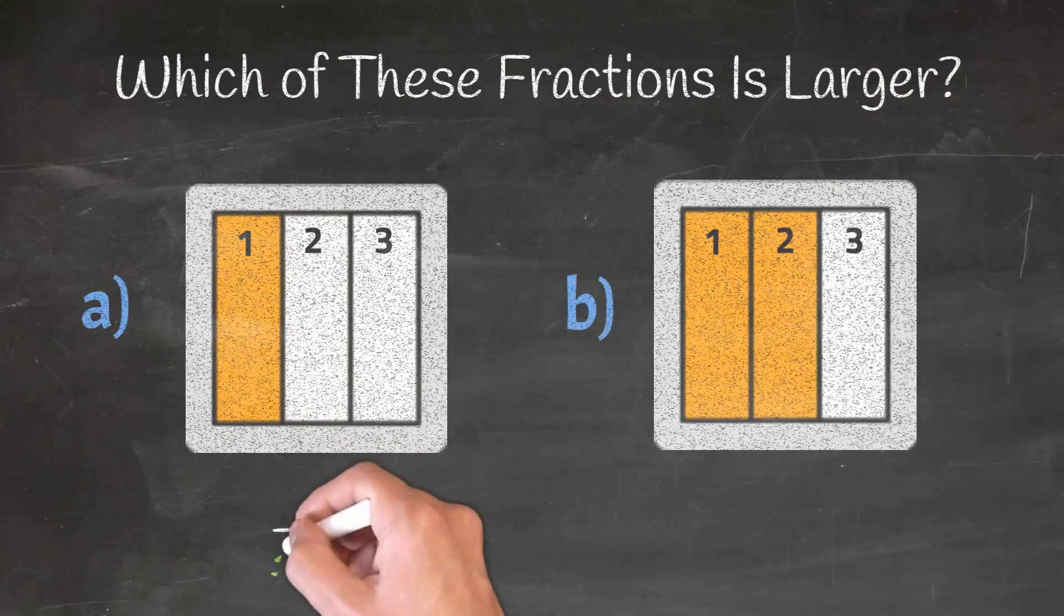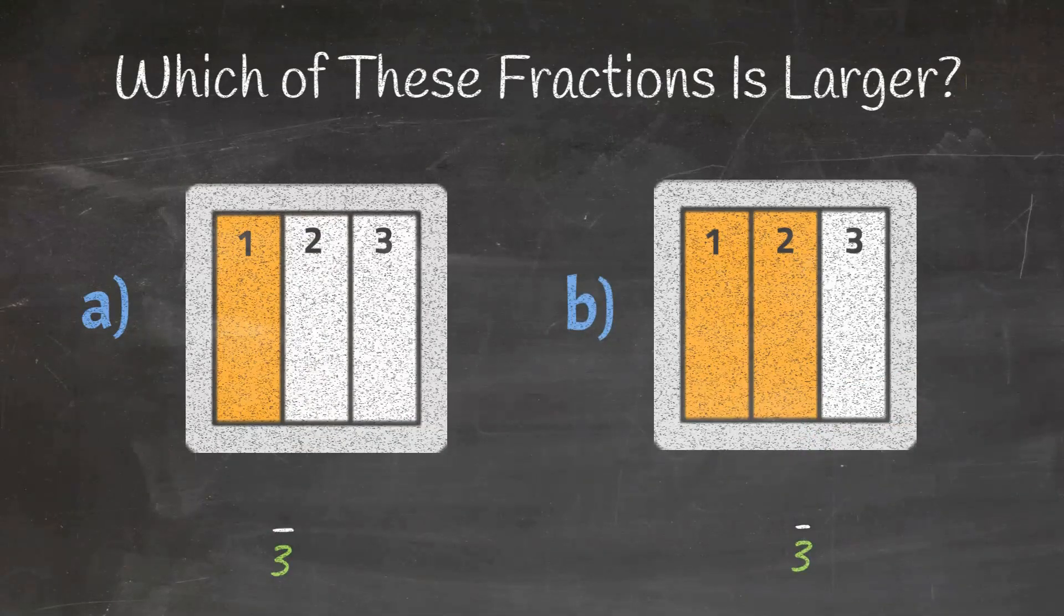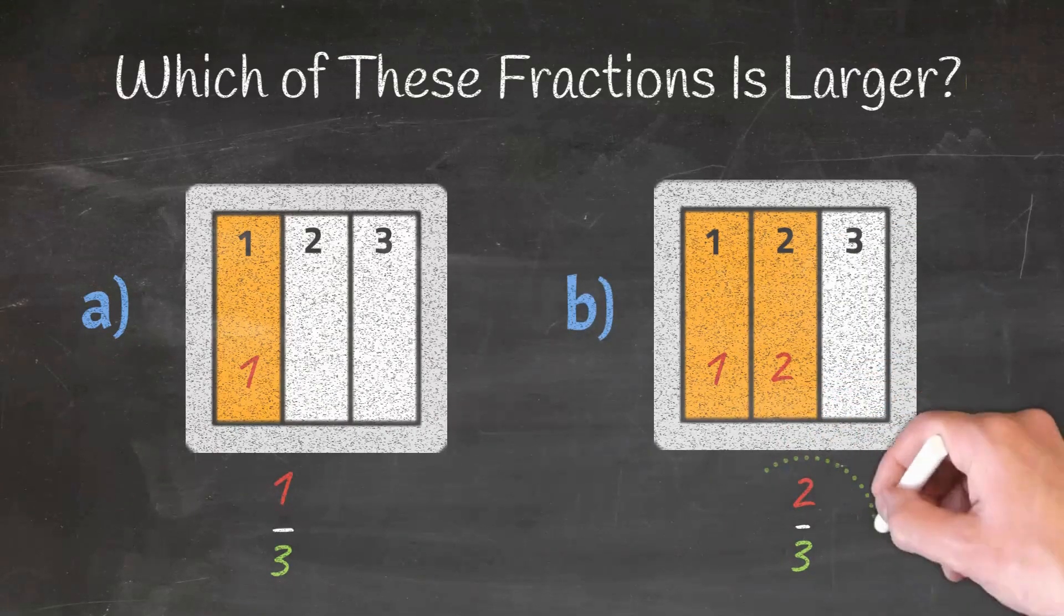Now that the denominator is three, let's count the sections in each fraction. Fraction A has one section, and fraction B has two sections. Clearly, we can see that fraction B is larger than fraction A.